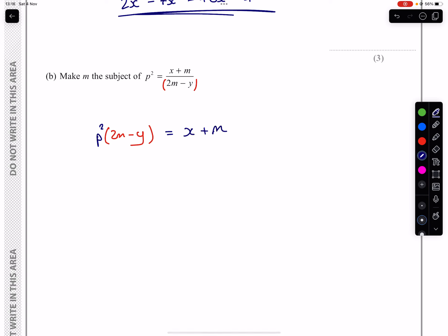I then want to get all of the M's on the same side, but before I can do that, I need to free this M from the bracket that we have there. So I'm going to expand that to give me a 2. It doesn't matter if this is not in alphabetical order, but I'm just going to write it in alphabetical order. 2M P squared minus P squared Y on the right and X plus M on the left.